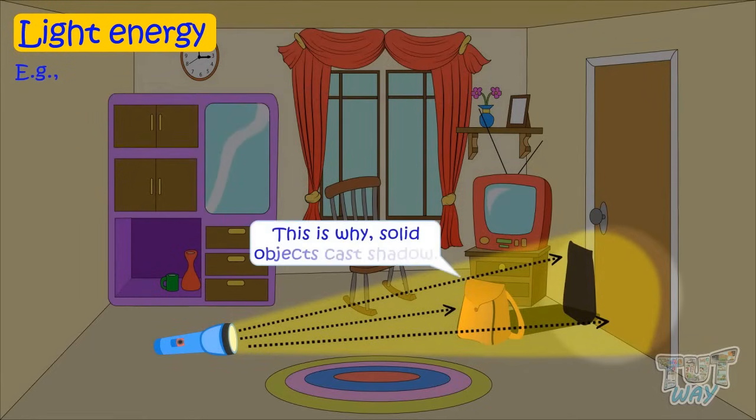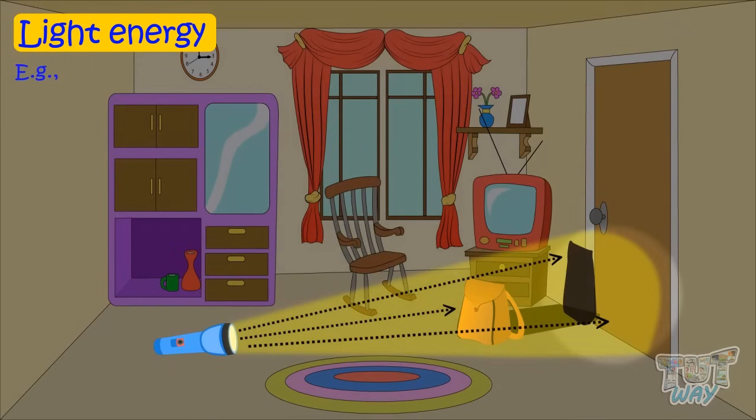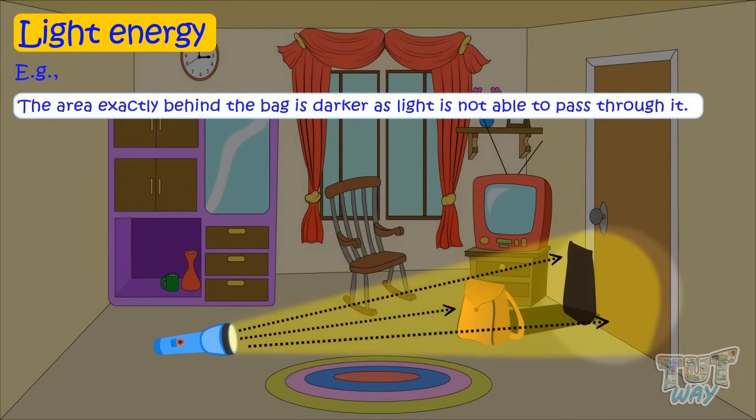This is why solid objects cast shadows as light is not able to pass through them. The area exactly behind the bag is darker as light is not able to pass through the bag. And this is what we call as shadow.